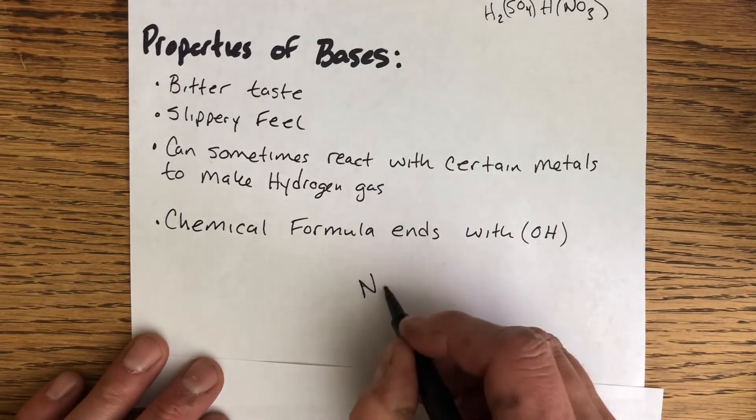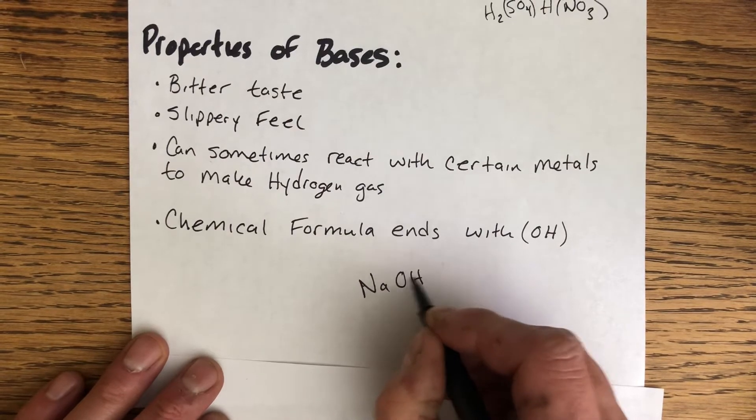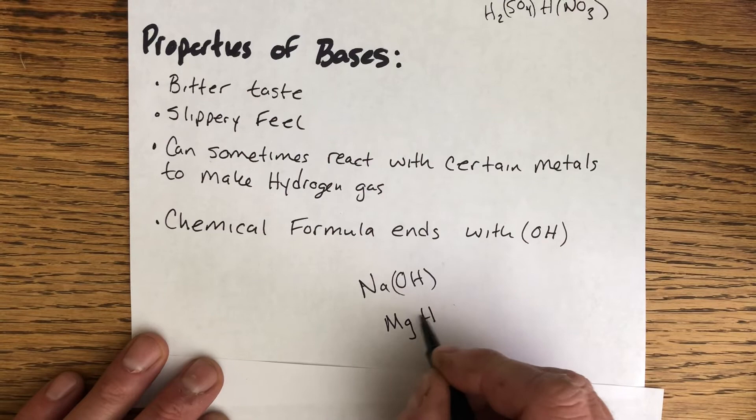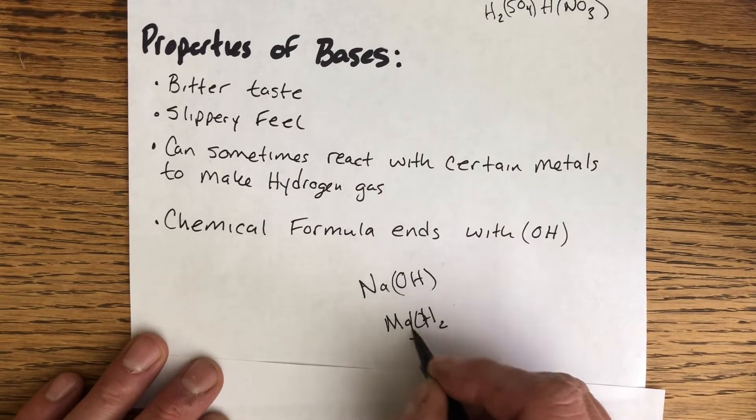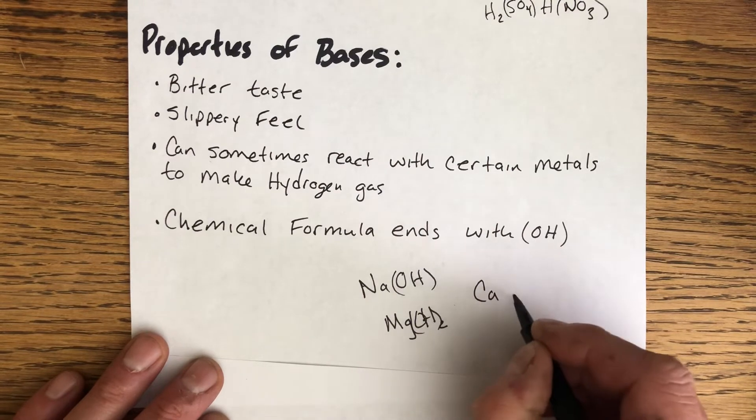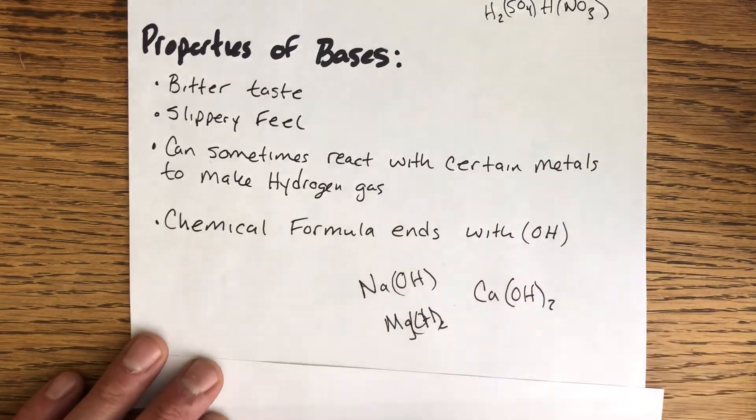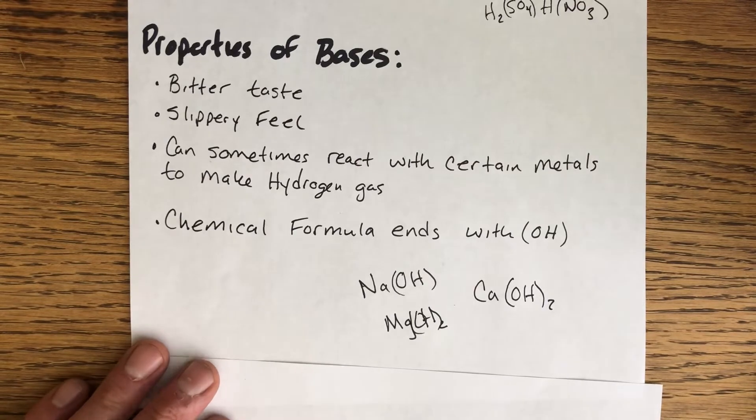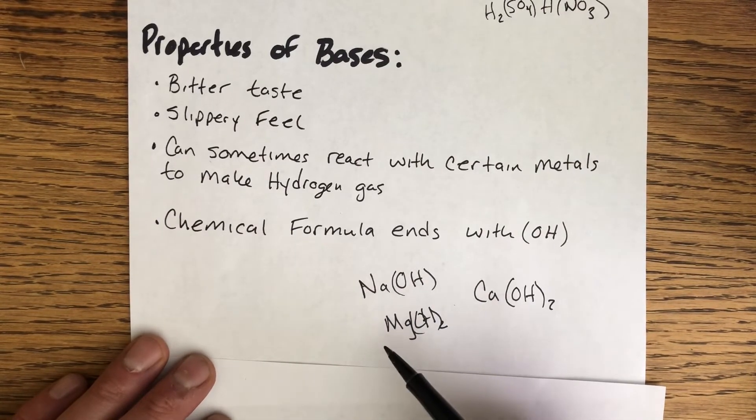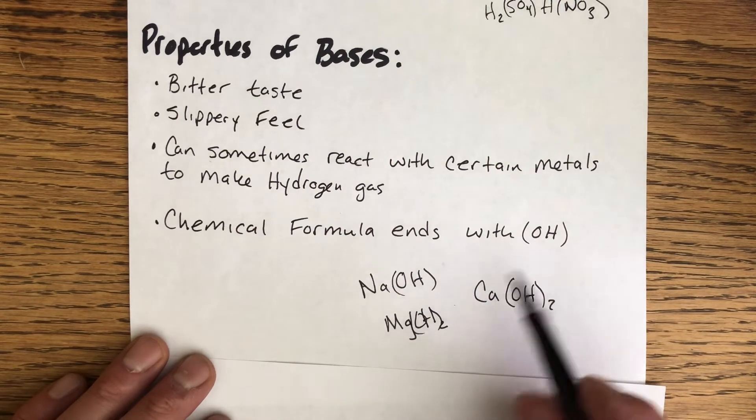Again, like sodium hydroxide, magnesium hydroxide, we might have something like calcium hydroxide. Basically, the metal that is attached to the hydroxide comes from the far left of the periodic table typically.